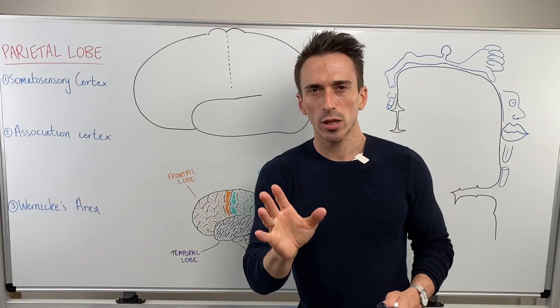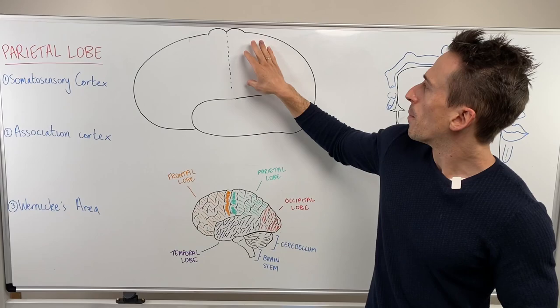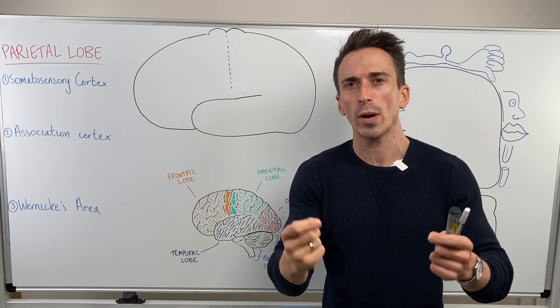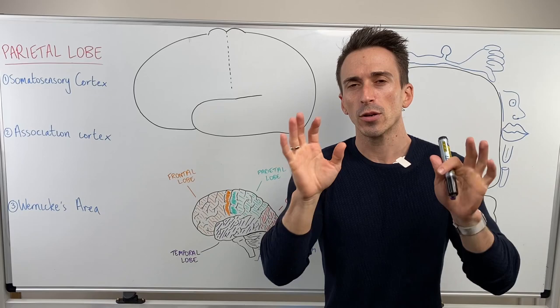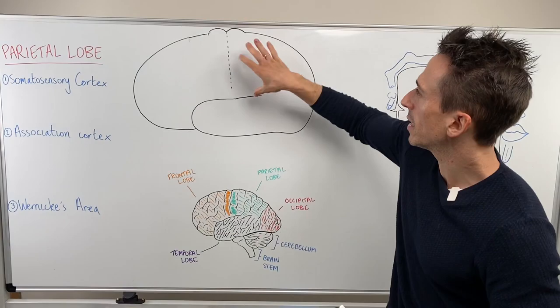When we have a look at the parietal lobe, the way you should think about it is it is the sensory cortex. When we spoke about the frontal lobe, it's the motor cortex — the action area. The parietal lobe is the sensory cortex. This is where we get an understanding of the things that we are experiencing in our body and also in the environment around us. It's important when it comes to understanding tactile information — touch, proprioception, temperature, and pain. This is where we understand it, in the parietal lobe.